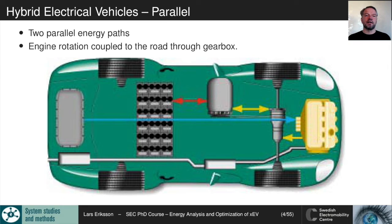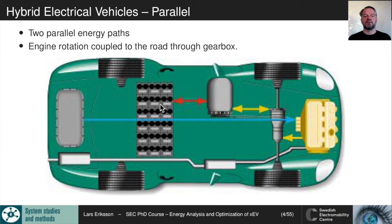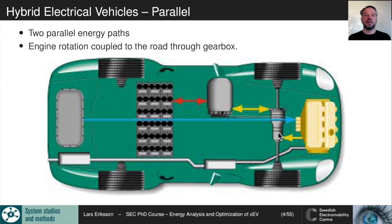Last lecture we looked at the parallel hybrid electric vehicle, where we have two parallel paths: one from the fuel tank through the engine out to the wheels, and one from the battery through the electric machine out to the wheels. The electric machine enables recovery so we can recuperate kinetic energy. The engine rotation is coupled to the road through the gearbox, so it must rotate synchronously with the wheels.